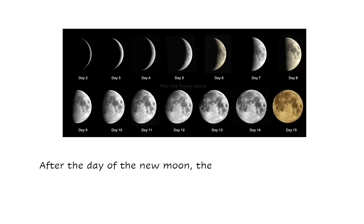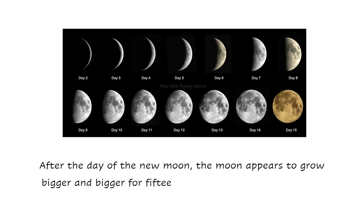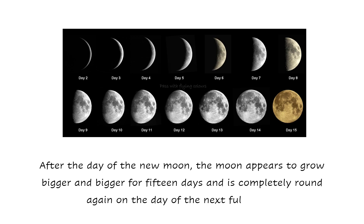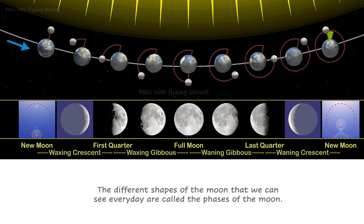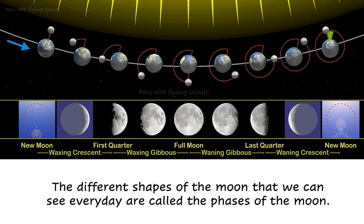After the day of the new moon, the moon appears to grow bigger and bigger for 15 days and is completely round again on the day of the next full moon. The different shapes of the moon that we can see every day are called the phases of the moon.